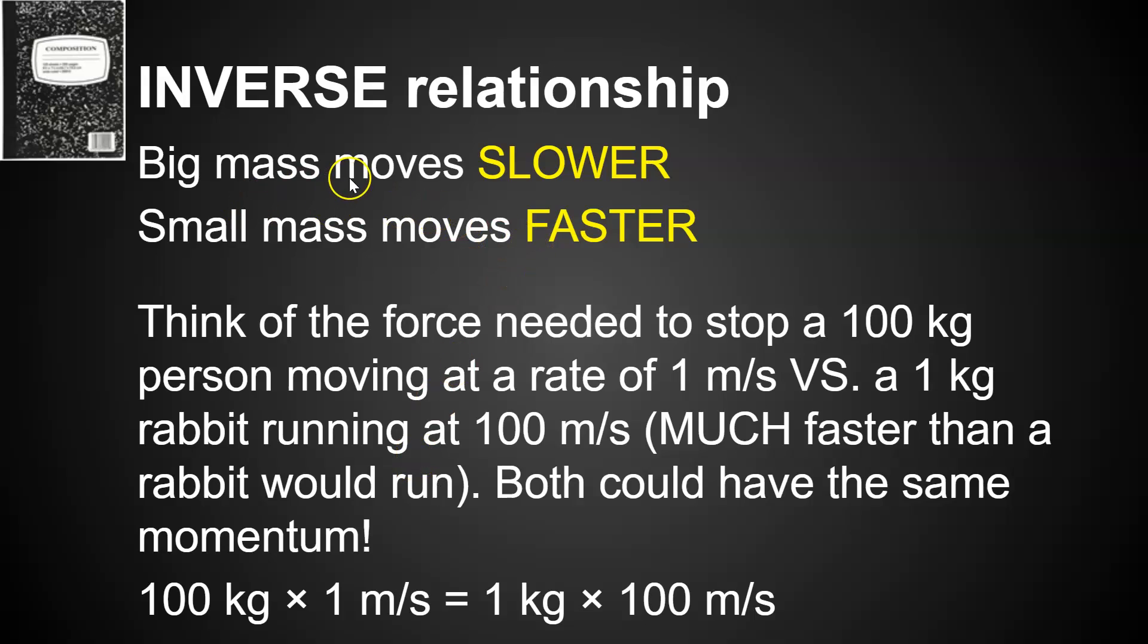So big masses tend to move slower and small masses move faster if they have the same momentum. So if you think about a 100 kilogram person, that's a person who weighs about 220 pounds. If they move at a rate of about 1 meter per second, they would have the same momentum as a 1 kilogram rabbit running at 100 meters per second. So, you know, that'd be a very fast rabbit, but they both would have the same momentum. 100 kilograms times 1 meter per second is equal to 1 kilogram times 100 meters per second. So 100 times 1 is 100. 1 times 100 is 100. So it's the same thing in either situation.